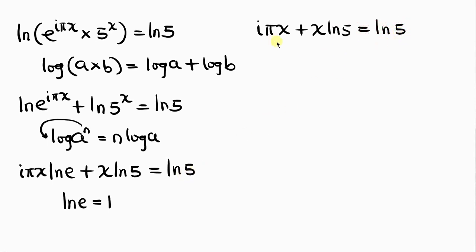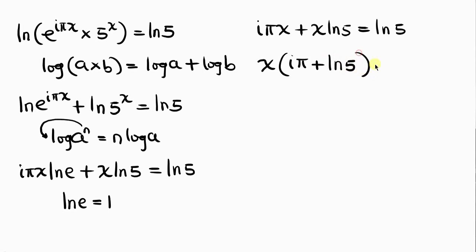Our next step is to factor out x from the left-hand side, because x is common to both terms. Factoring out x, we get x times the quantity i pi plus ln 5, equal to ln 5.